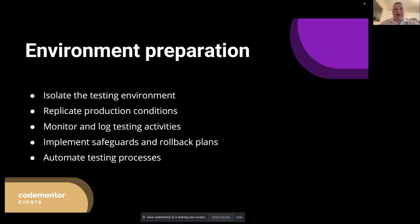Now that we have a good understanding of the different types of failures, let's discuss setting up an environment for failure testing. To ensure that our testing is both effective and safe, it's crucial to create a dedicated testing environment that closely mimics real-world conditions. First, isolate the testing environment: we need to set up an isolated environment that does not interfere with production systems or data. This can be achieved by creating a sandbox, staging environment, or dedicated test instances, minimizing the risk of unintentionally affecting live systems, users, or data.